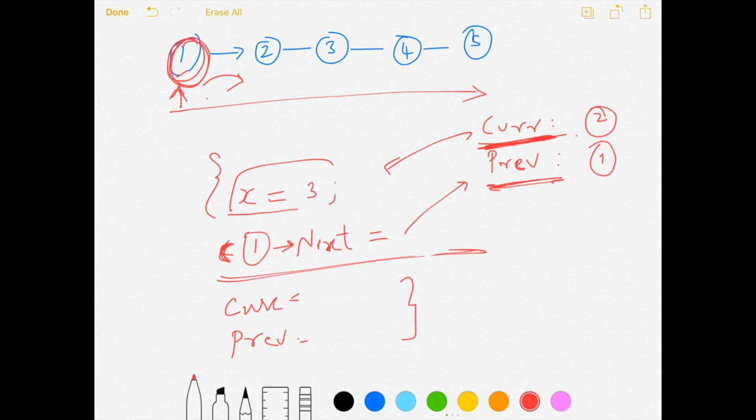Now I am updating my next node. I am going to be looking at the current node, current node's next value. I am going to be setting it to the previous value. What is my previous value? One. So I will be setting the next value after two to become one.